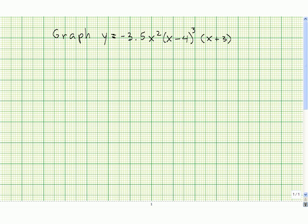To graph this, we should start by putting down what the degree is. x squared, so we have degree 2 there, degree 3 here, and degree 1 here. So in total, we have a degree 6 function, polynomial, in factored form.